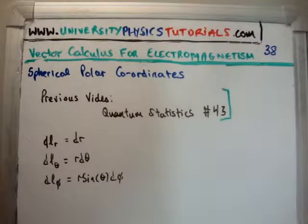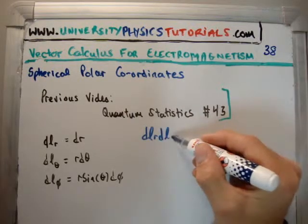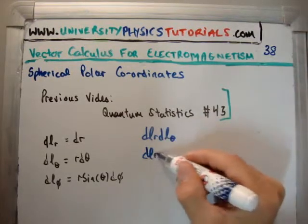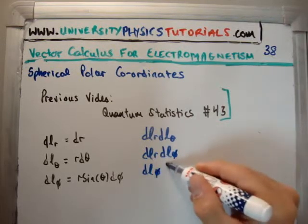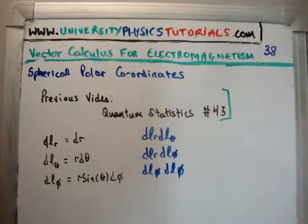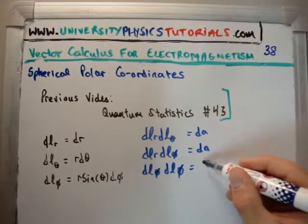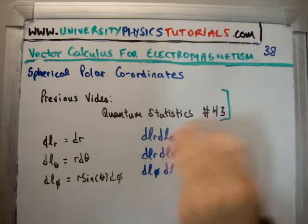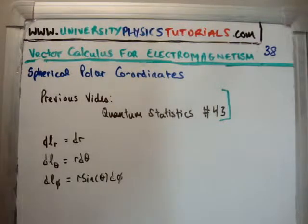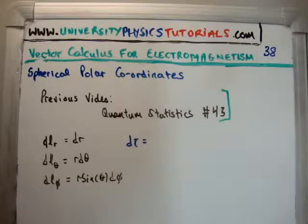So that means, if you're talking about an area, well an area, you can either have dl sub r and dl sub theta, you have dl sub r, dl sub phi, you could have dl sub phi, dl sub theta. There's the three combinations you can have. Each of them giving you a different infinitesimal area element. So it depends on which variable is constant when you do that. So you have three different possible area elements.